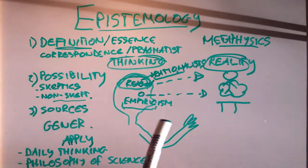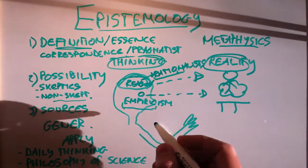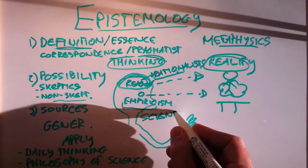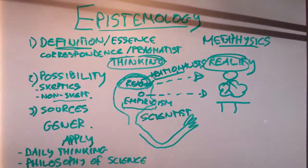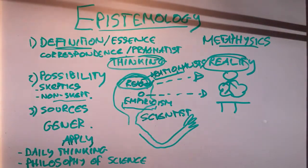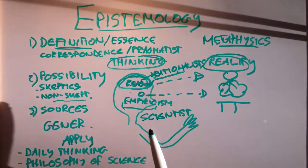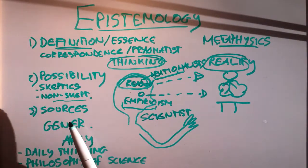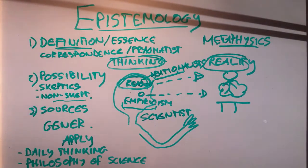So then, our knower here becomes a scientist. Now he's a scientist. And we ask these questions about our scientist. What is scientific knowledge? Is it possible to acquire scientific knowledge about reality? And what are the sources of scientific knowledge?